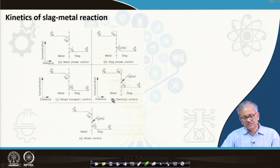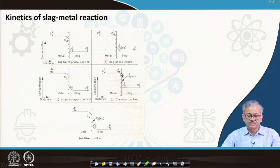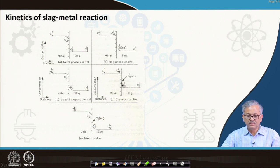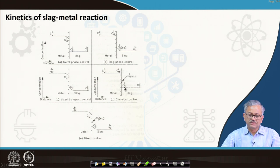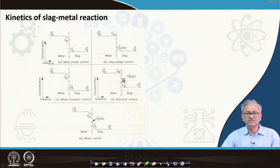In the chemically controlled case, mass transfer is quite fast compared to the chemical reaction at the interface. The interface has not attained actual equilibrium — CMI (metal side) and CSI (slag side) concentrations at the interface are not at equilibrium. The equilibrium concentration CSI-equilibrium lies slightly higher. This is called chemically controlled when surface reaction is the rate-controlling step.